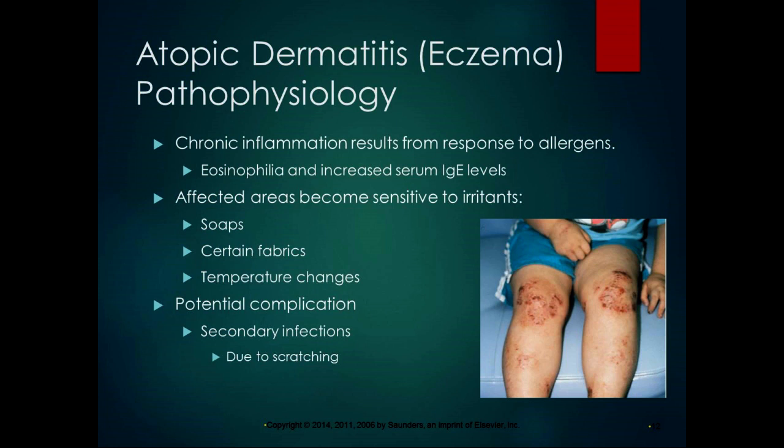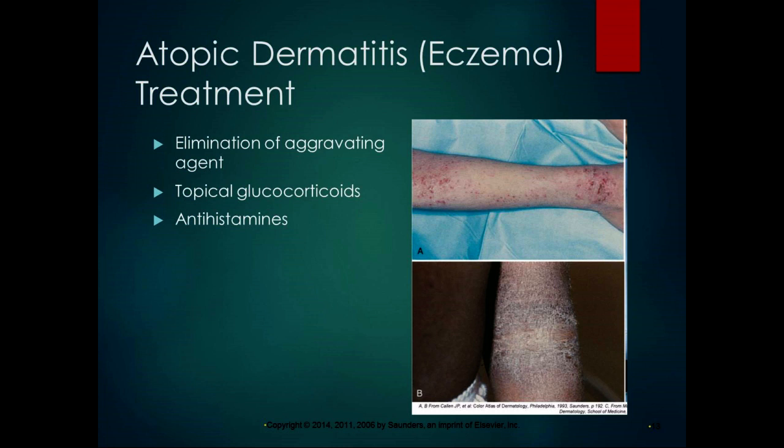Affected areas become more sensitive to irritants such as soaps, certain fabrics, and temperature changes. A potential complication of eczema is secondary infections due to scratching, especially difficult to prevent in young children. Treatment involves eliminating the aggravating agent — whether laundry detergent, soap, or another trigger — along with topical glucocorticoids and antihistamines. New topical prescription medications have been developed recently that treat eczema well, so seeing a dermatologist is worthwhile.